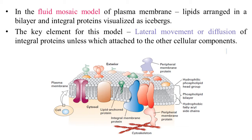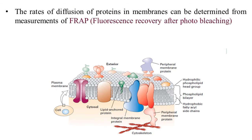The rates of diffusion of proteins in membranes can be determined from measurements using FRAP. With the help of FRAP, we can measure how fast proteins are moving within the cell membrane. A fluorescence molecule — a fluorophore — is needed, which emits colors observable under the fluorescence microscope.